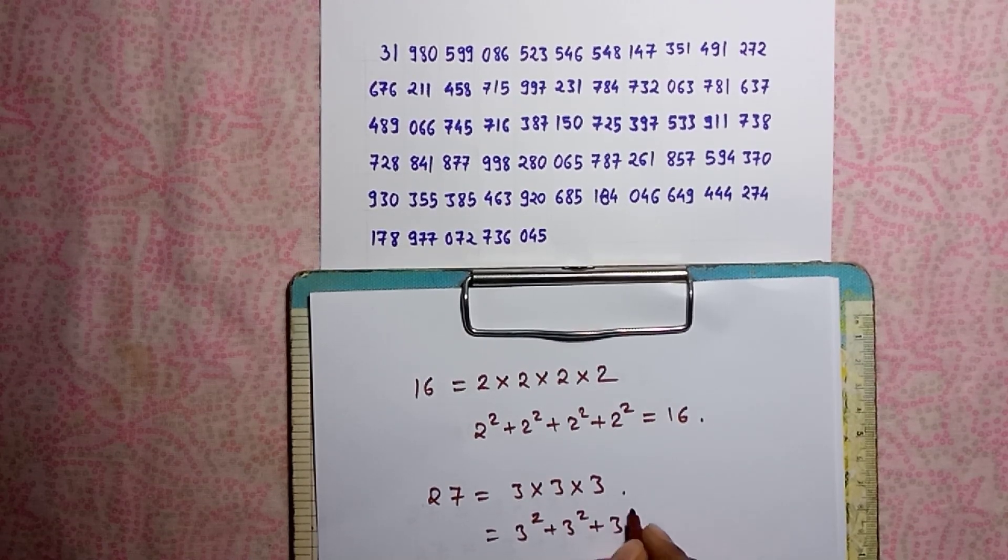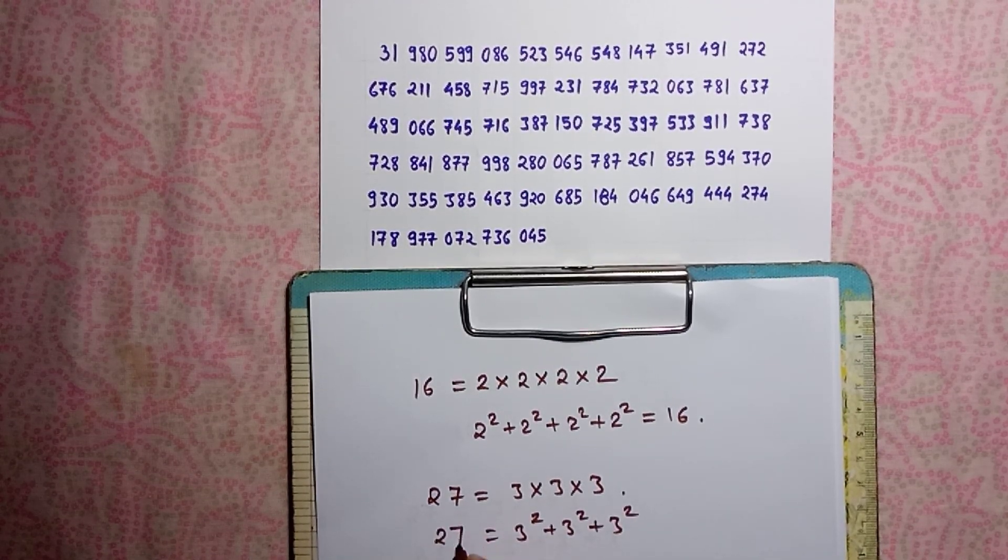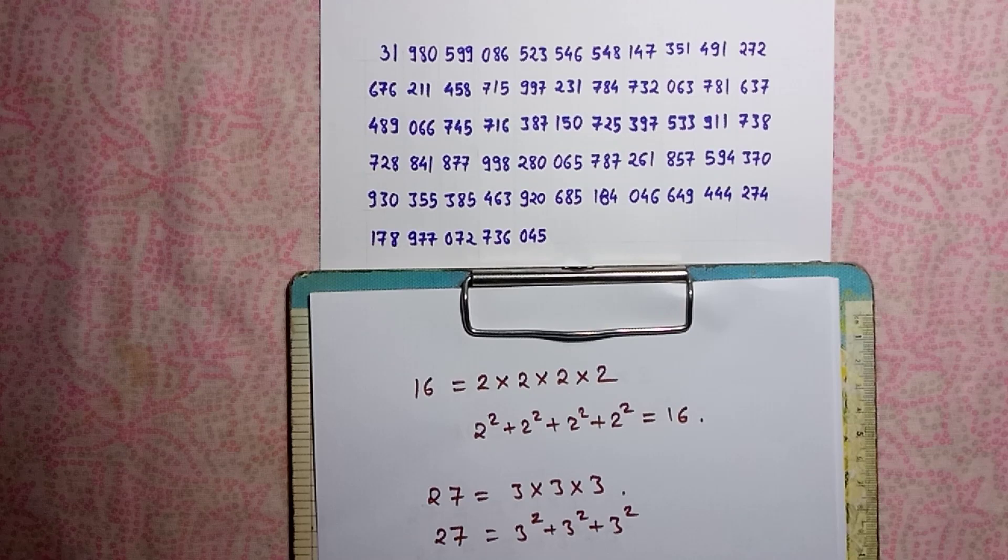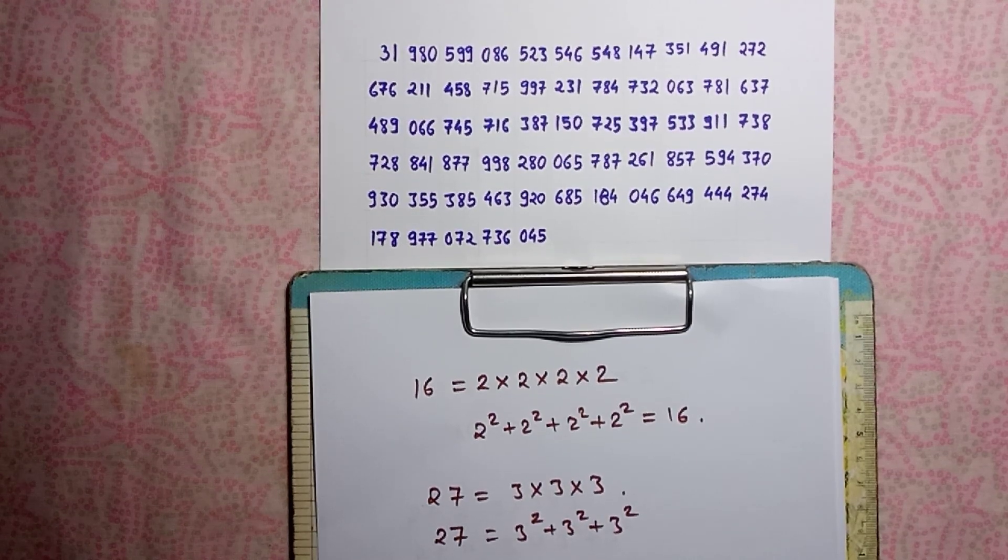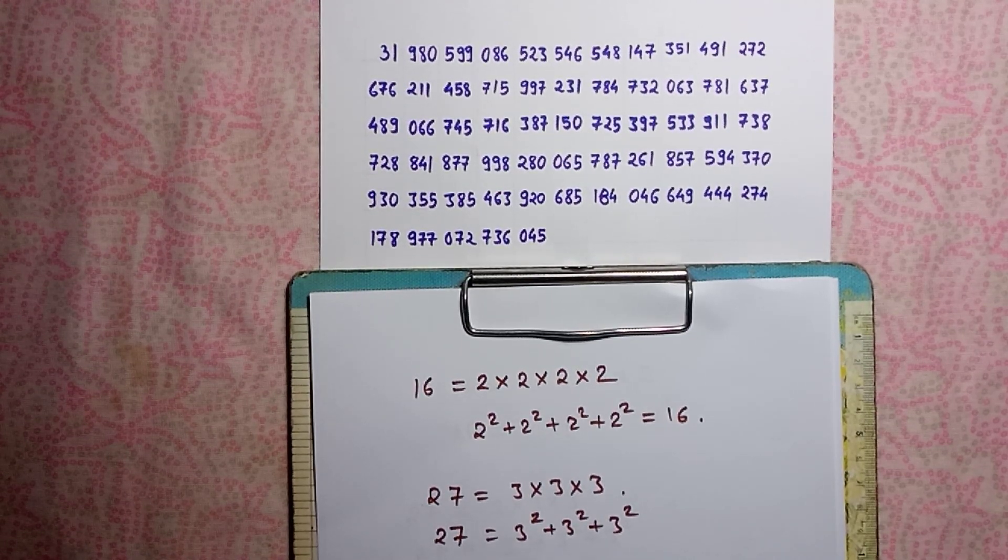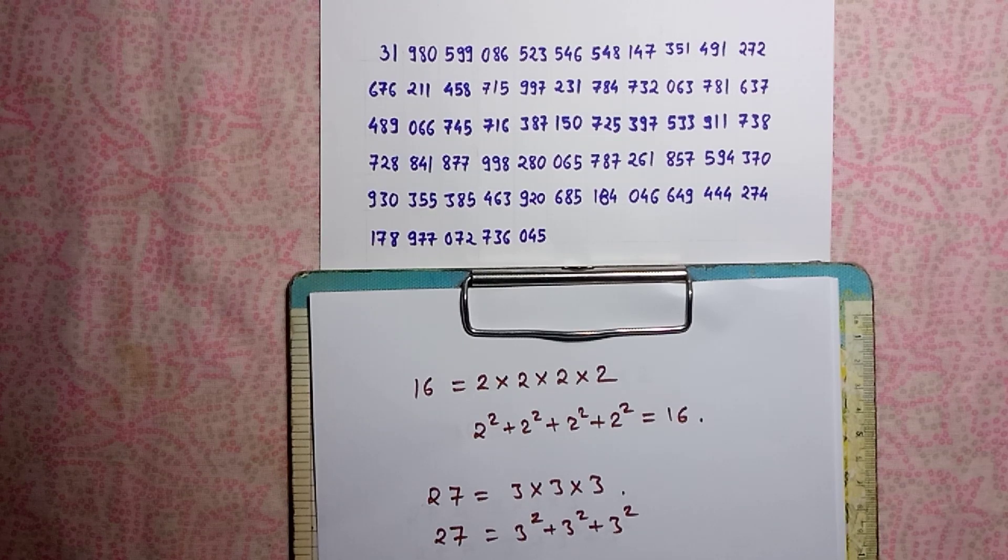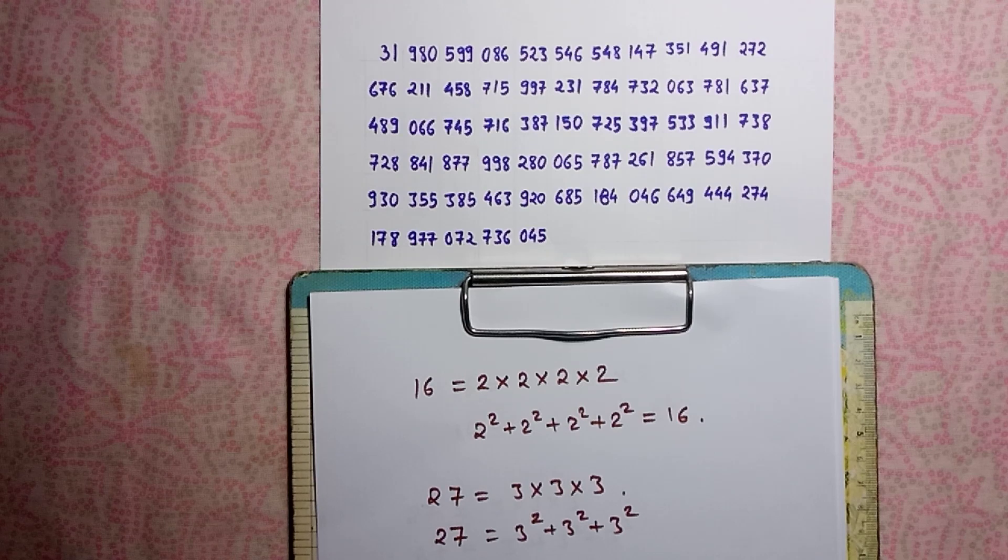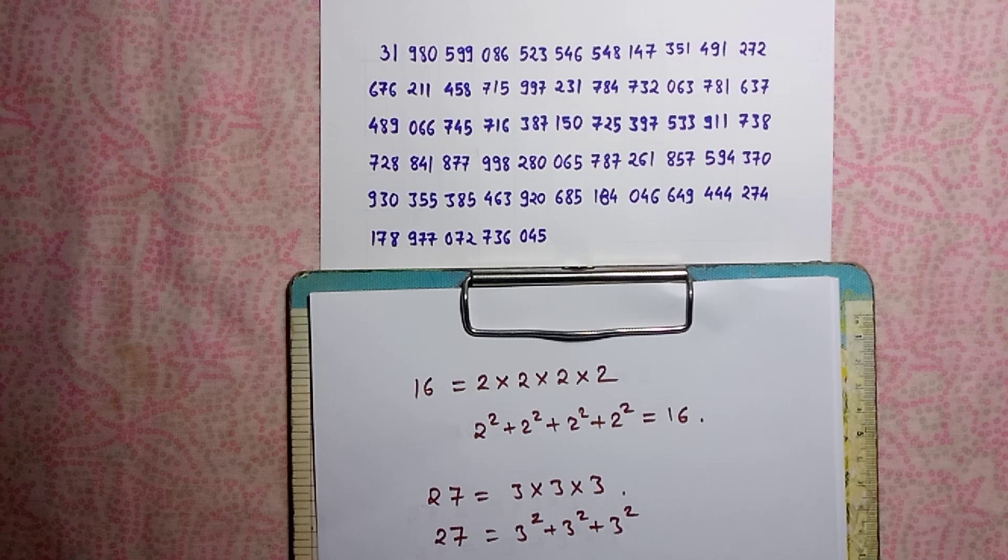Let's make a sequence: 16, 27, and which is the next one? It's next interesting number like 16 and 27. You know, if we check up to million, we couldn't get next one.